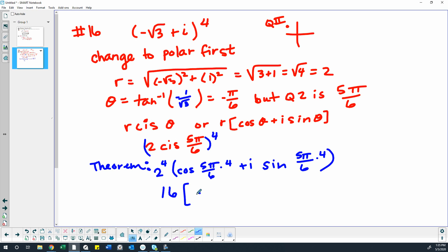So that gives us 2 times 2 is 4 times 2 is 8 times 2 is 16. And then we have the cosine of 20 pi over 6.